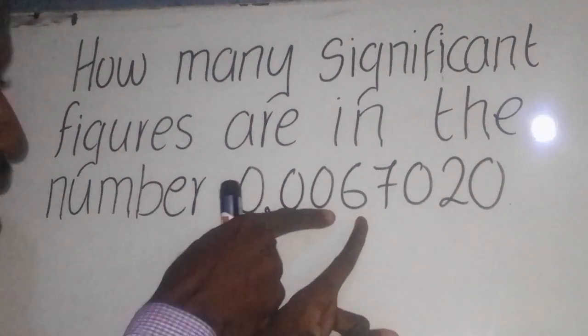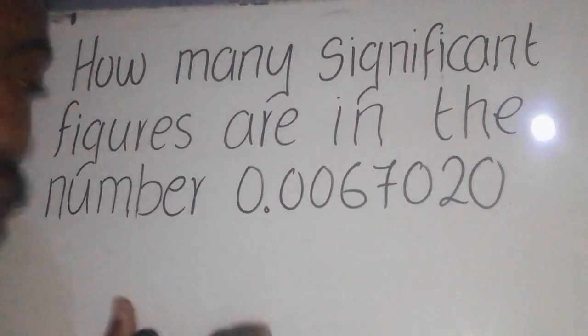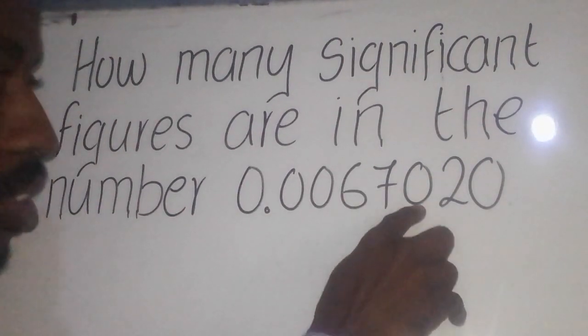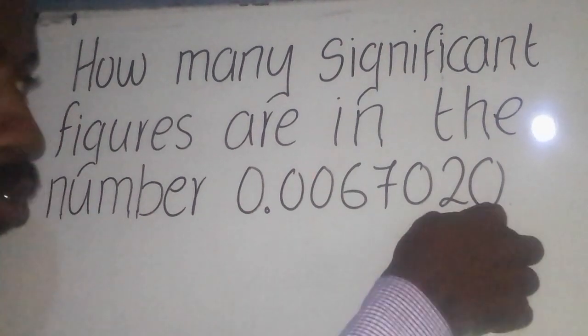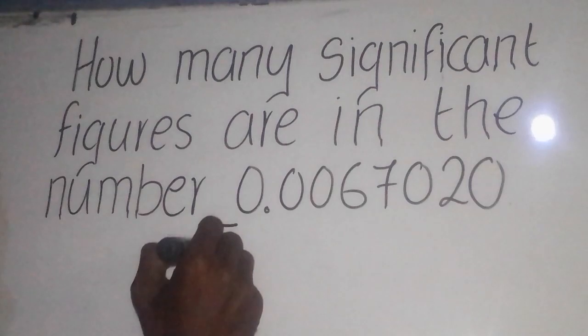Starting from 6, because these zeros in front are not significant figures. So you count like this: 1, 2, 3, 4, 5. So the answer here should be 5.